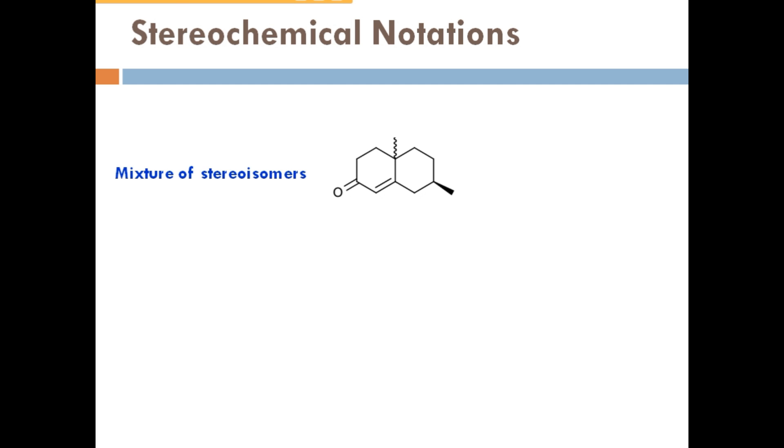In this structure, you are seeing above the plane and this is, don't know above the plane or below the plane. This can be possible in both, above the plane or below the plane. This is a mixture of stereoisomerism, meaning R and S configuration, the mixture of isomerism.